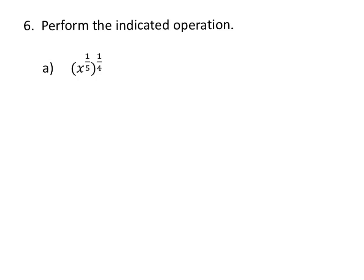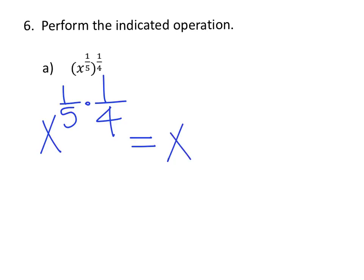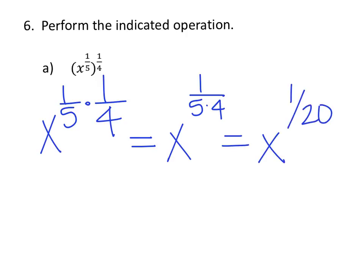In this expression we have the power rule — a power raised to another power — so in this case we multiply the exponents. It's going to be x to the 1/5 times 1/4. When multiplying exponents we multiply straight across, so it's going to be x to the 1 over 5 times 4, which is x to the 1 over 20.